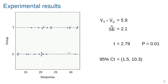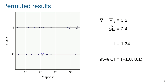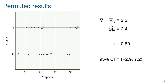We can keep all the responses the same but randomly permute the treatment assignments — take a random 12 responses and call them the treatment group, and take a random 12 responses and call them the control group. In one permutation, the difference between the two averages is about 2.9, giving a t statistic of 1.2. In another permutation of the same 24 responses, the difference in averages is about 3, with a t statistic of 0.3.